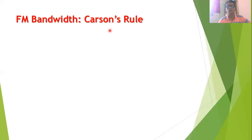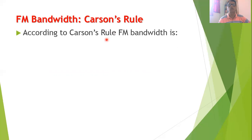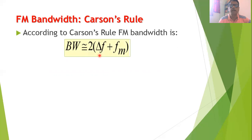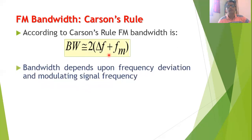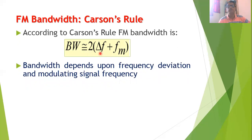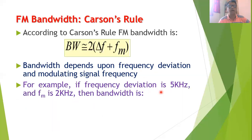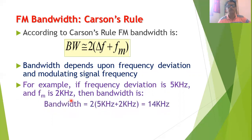The second method is Carson's rule, discovered by the scientist Carson. According to Carson's rule, FM bandwidth is given by: BW = 2(ΔF + FM), where ΔF is the frequency deviation and FM is the modulating signal frequency. For example, if ΔF = 5 kHz and FM = 2 kHz, then BW = 2 × (5 + 2) = 14 kHz.